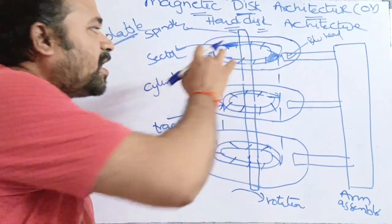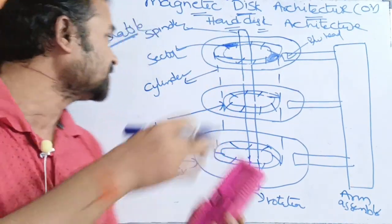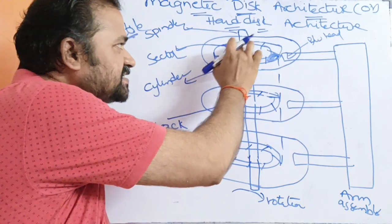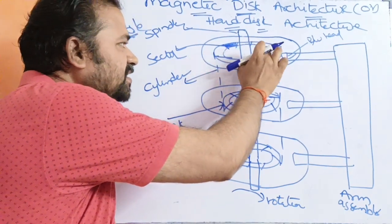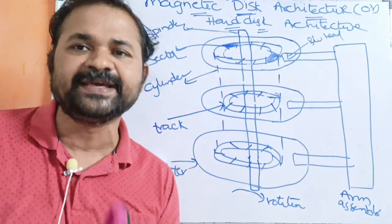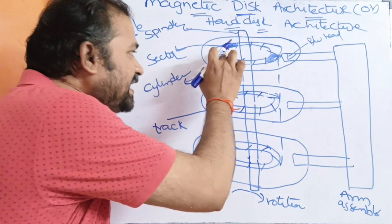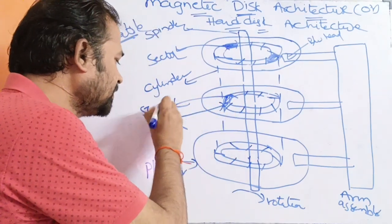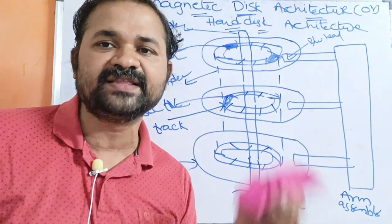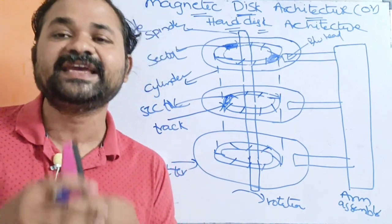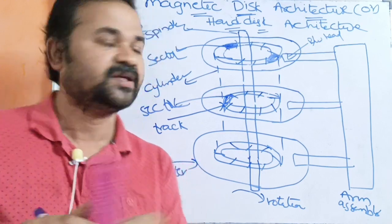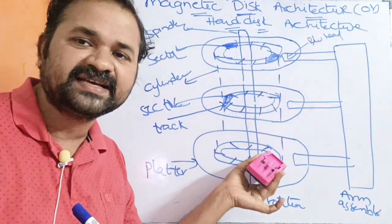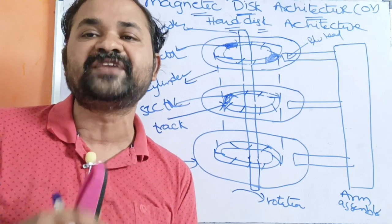The tracks are subdivided into various parts called sectors. Each track is divided into several sectors. The information is mainly stored in the sectors — the data will be stored in the sector. The number of sectors in each track must be equal. So if this track contains 256 sectors, then all other tracks should also contain 256 sectors.